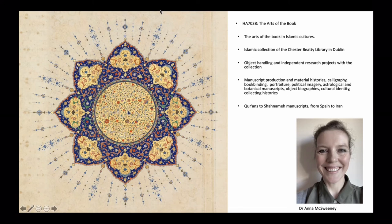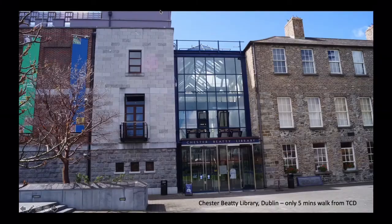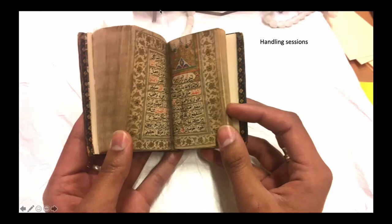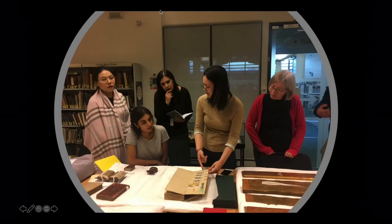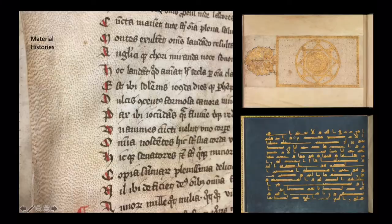The Chester Beatty Library is just up the road from Trinity in the centre of Dublin and holds a world-class collection of Islamic manuscripts. Much of the module will focus on object handling, and there will be an element of independent research projects dealing with the collection directly. We will look at topics including manuscript production, material histories, calligraphy, bookbinding, and portraiture, as well as thinking about object biographies, issues of cultural identity, and collecting histories. Here's the Chester Beatty Library — it's only five minutes walk from Trinity. We will spend quite a bit of time engaged in handling sessions with the collection, looking directly at the collections themselves.